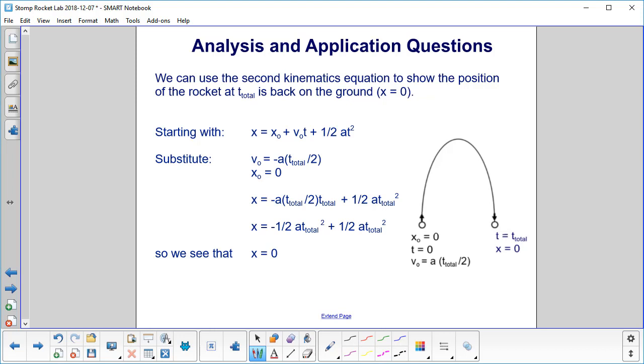We can now use the second kinematics equation to show the position of the rocket at t_total. And hopefully that shows that it's back on the ground. So here's our second kinematics equation. We substitute in our initial velocity and our initial position. And we want to find the final position. So we put these two values in for here and here. And that's this line here. We carry out the algebra. And what happens with these two? They sum up to zero. So yes, we do wind up at the place we started, according to the calculations.